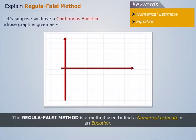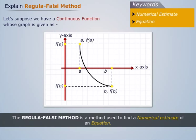Let's suppose we have a continuous function whose graph is given. Let the value of function at a is f(a) and at b is f(b). We are interested in finding the point at which function intersects the x-axis.